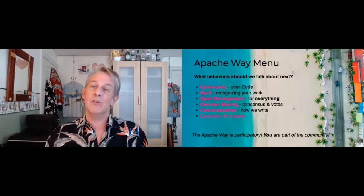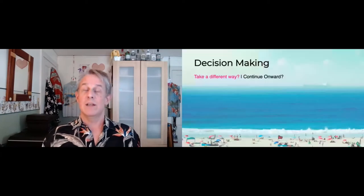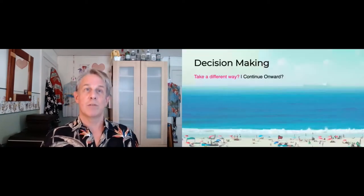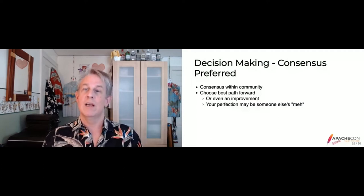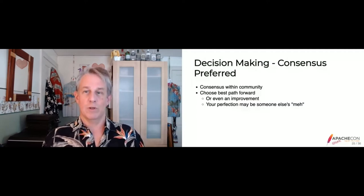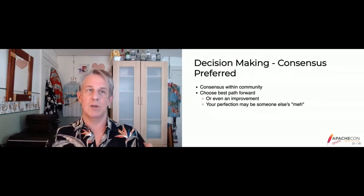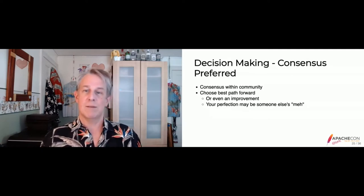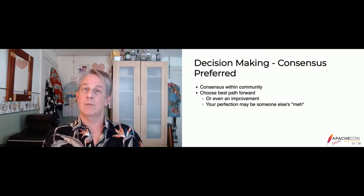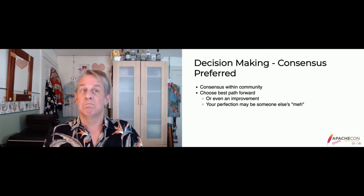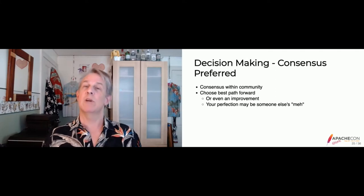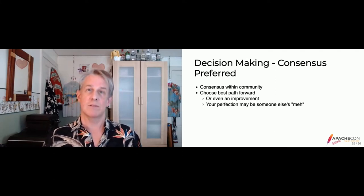Decision-making — how do we do it in Apache projects? Consensus is preferred. Consensus within a community is the best path forward. It's not necessarily perfection or getting everything done all at once. It's going forward step-by-step. Is this new thing an improvement? Does it do something somebody finds useful? There are times where a feature I really want to put in, you may not care about. But if you don't mind if I put it in, then we have consensus.